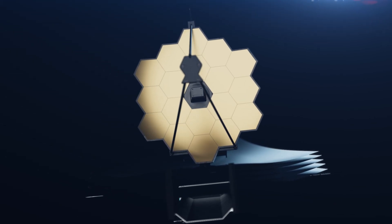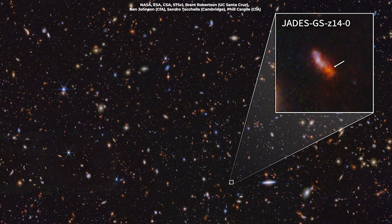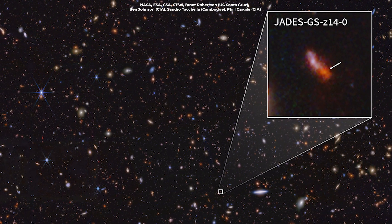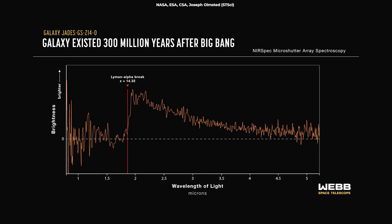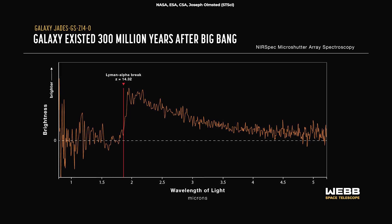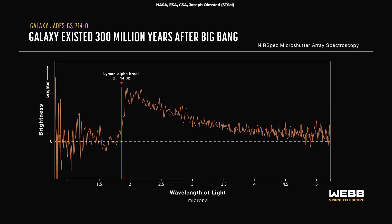This allows Webb to see galaxies like JADES-GS-z14-0, which existed when the universe was only about 290 million years old. Observed at a redshift of about 14.32, this is the most distant galaxy ever seen to date.